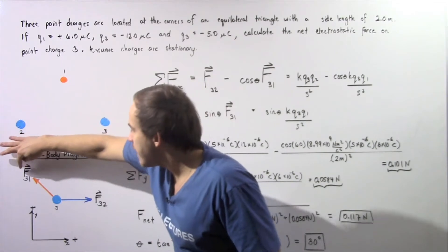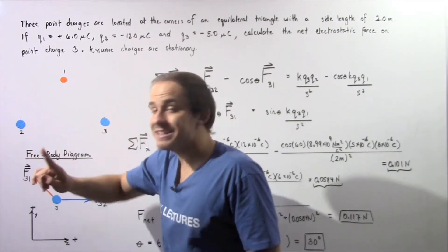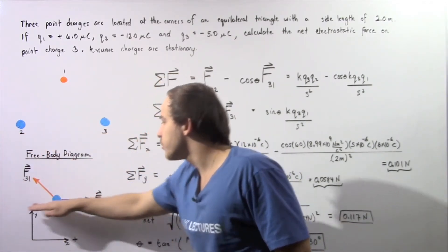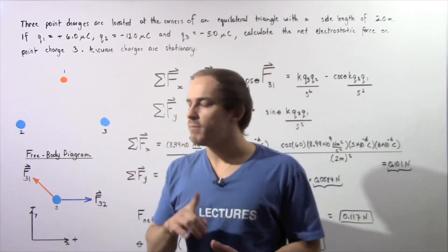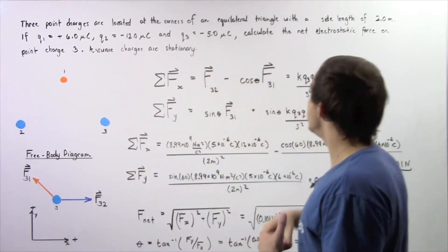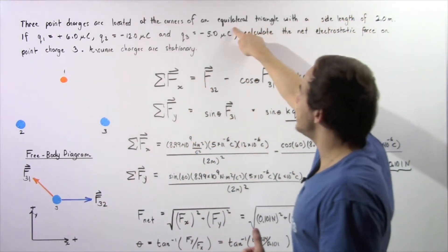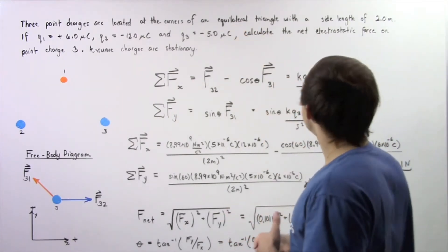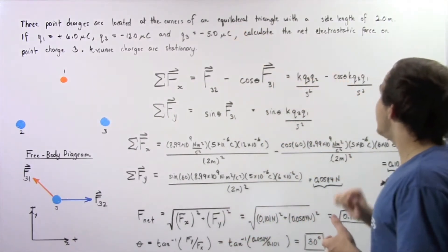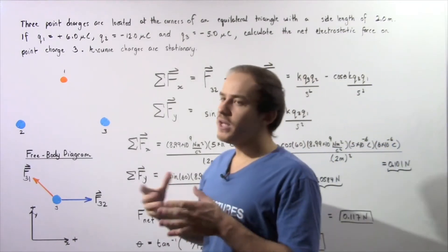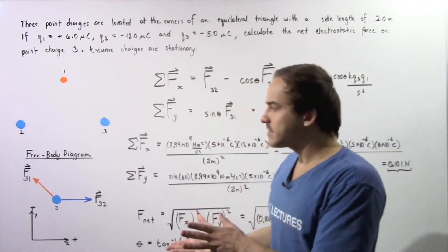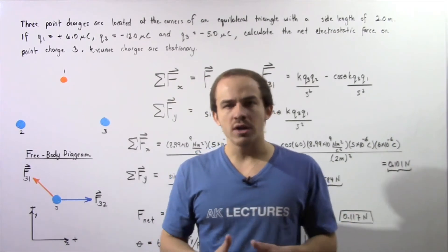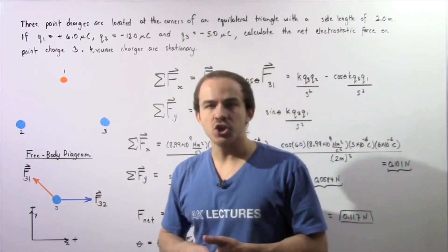So we have force F31, and the angle that this force makes with respect to the x-axis will be 60 degrees because we're dealing with an equilateral triangle. In order to calculate the net electrostatic force, we have to find the x-component force and the y-component force acting on this point charge.